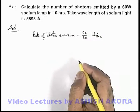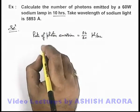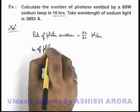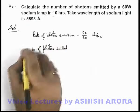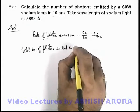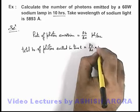If we wish to calculate the total number of photons emitted in a given time, then we can directly write: number of photons emitted in time t equals Pλ/hc multiplied by t.